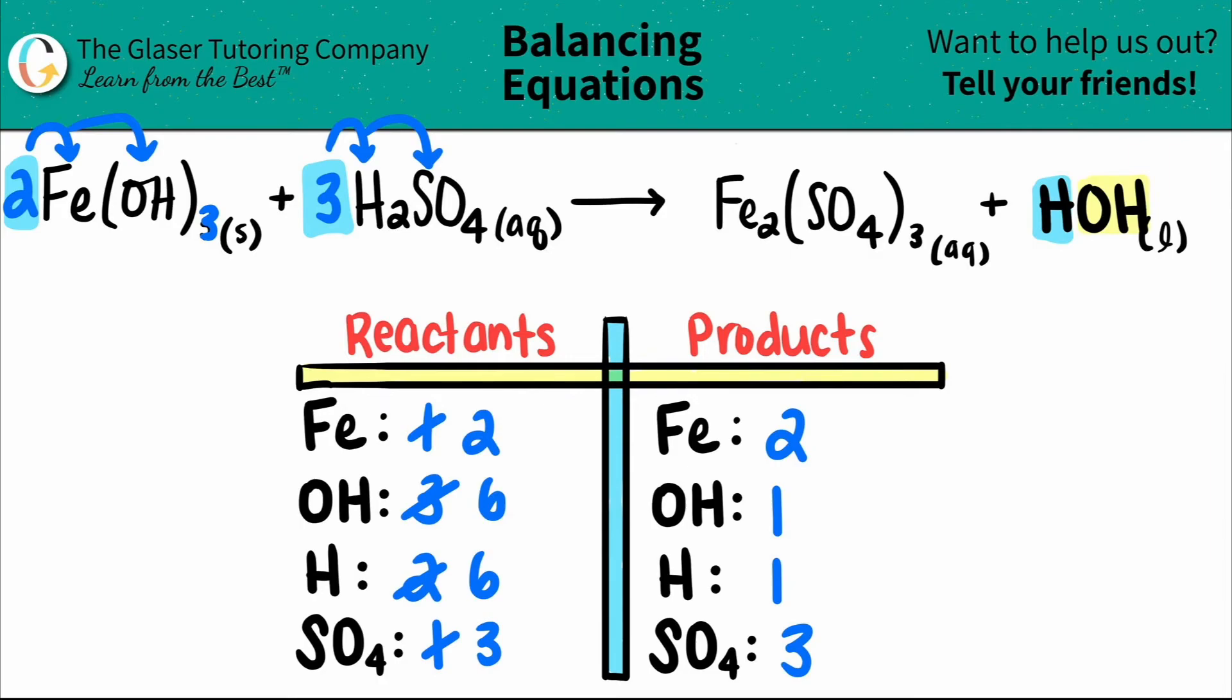We're getting closer. The only thing that we have to balance now is the H and the OH. But that's all over here, right? Doesn't matter. They're both one and they want to go to six. So one times what will get me to six? Six. And whatever number you put is the coefficient that goes in the front. So there's going to be a six in the front. And you got to be fair. It goes to the H and the OH. So there's six OHs now and six Hs.